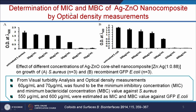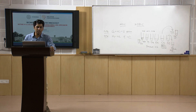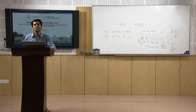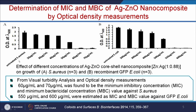MIC and MBC can also be studied by optical density (OD) measurement. When estimating DNA or protein, we use absorbance at 260 or 280 nm. For bacteria, we use OD because it is scattering light, not absorbing it—there is a difference between absorbance and optical density. For example, with SRAS bacteria treated with different concentrations of Ag-ZnO nanocomposite, bacterial growth decreases with concentration. MIC and MBC values differ between gram-positive and gram-negative bacteria.